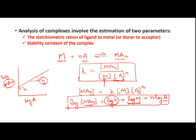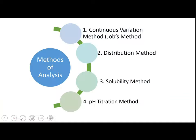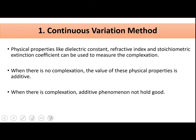Moving ahead, there are four methods of analysis: first is the continuous variation method, also called the Job's method; second is the distribution method; third is the solubility method; and fourth is the pH titration method. Today we will be covering the first two: continuous variation and distribution method.